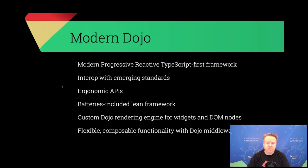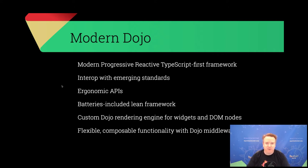I want to quickly give a summary of where we're at with Dojo. The most recent release was version 7. If you used Dojo toolkit before there are some similarities, but almost everything is new — rewritten from the ground up over several years, with the Dojo 2 release coming out in 2018. So in many ways Dojo is a modern progressive reactive TypeScript-first framework.